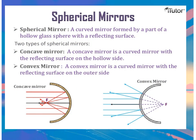A spherical mirror is a curved mirror whose reflecting surface is a section of a sphere. There are two types: the concave mirror and the convex mirror. A concave mirror is a curved mirror with the reflecting surface on the hollow side. As you notice on the picture, when light enters, it also exits from that same side.